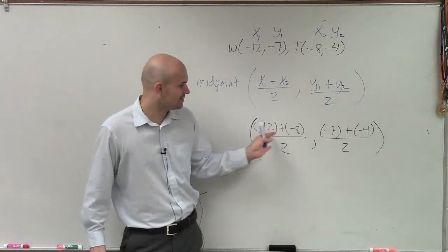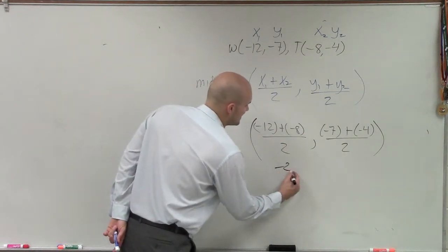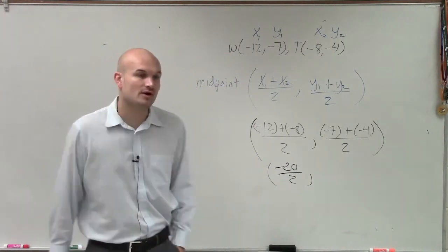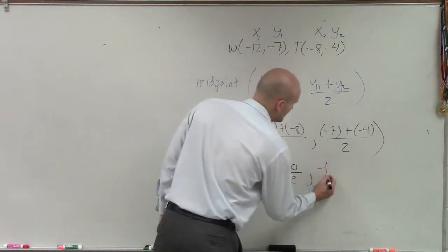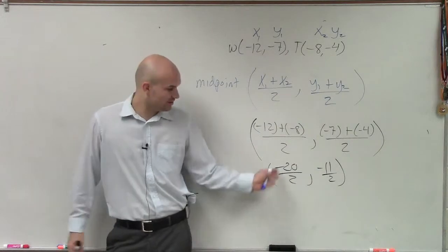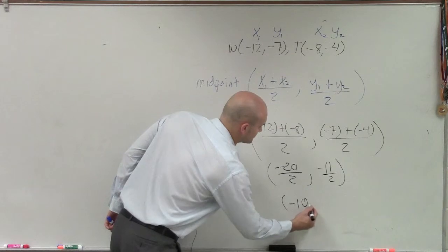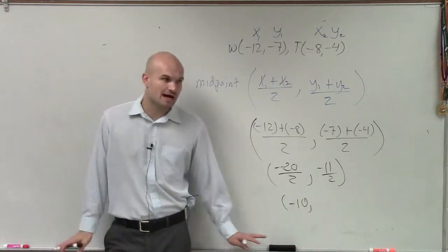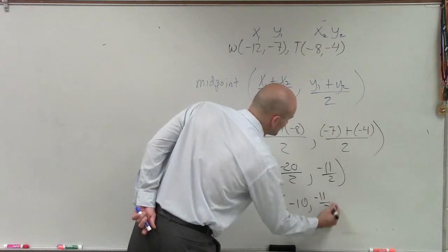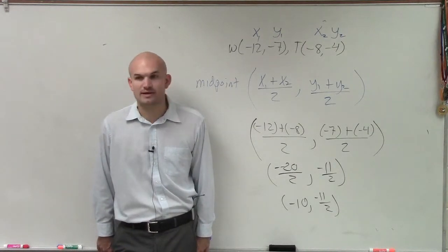So now I just add this up. Negative 12 plus negative 8 is going to be negative 20, comma, negative 7 plus negative 4 is going to be negative 11. Then I simplify further: negative 20 divided by 2 is negative 10. And negative 11 divided by 2 — I do not want you to give me the decimal version. Leave it as a fraction. If you can leave it in fractional form, that's the preferred method.